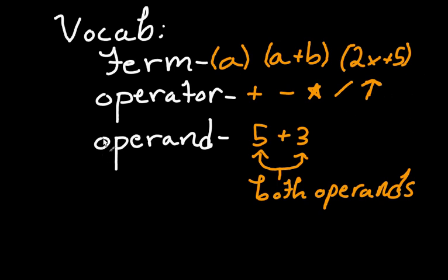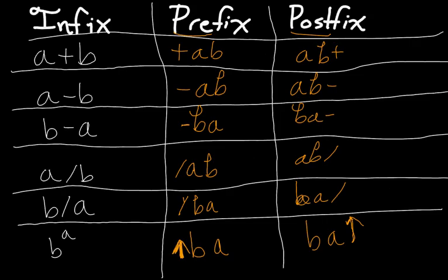And an operand is what you do operations to, as much of a cop-out that definition is. Like 5 plus 3, 5 and 3 are the operands, and in between we have an operator. So let's check some of these out. Now, the reason that we do this is because computers like to read prefix and postfix much better than they like to read infix.